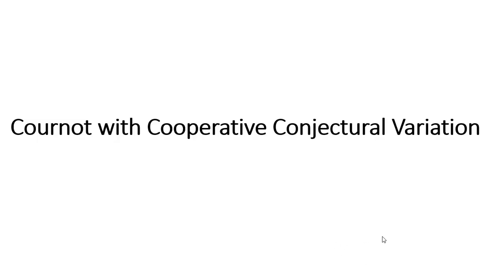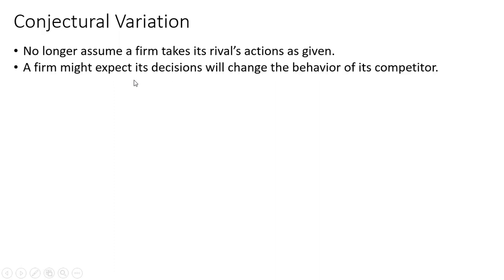This video will examine Cournot with cooperative conjectural variation. So what is conjectural variation? We're going to no longer assume a firm takes its rival's actions as given. A firm might expect its decisions will change the behavior of its competitor.